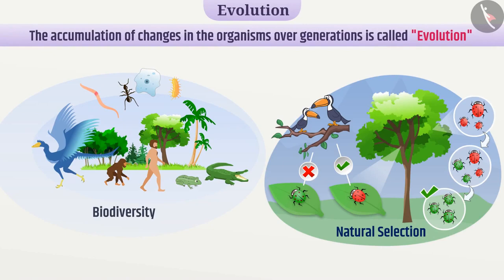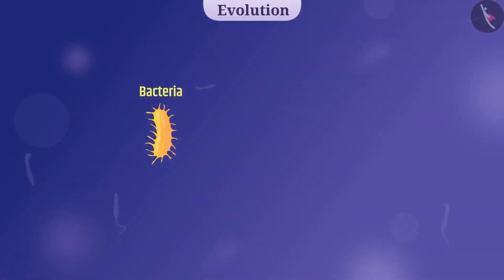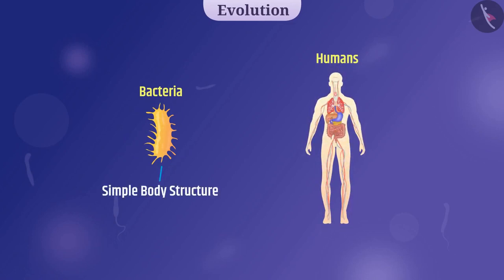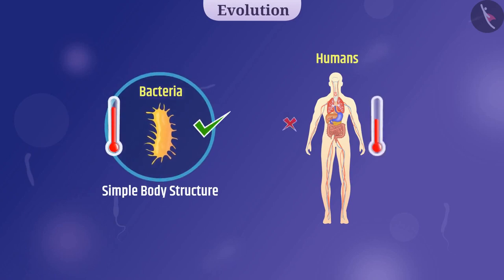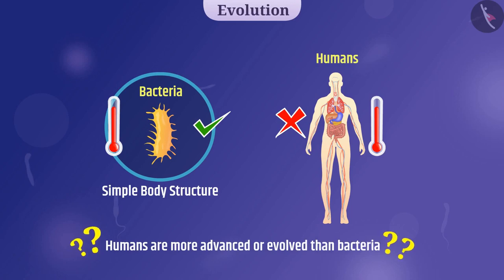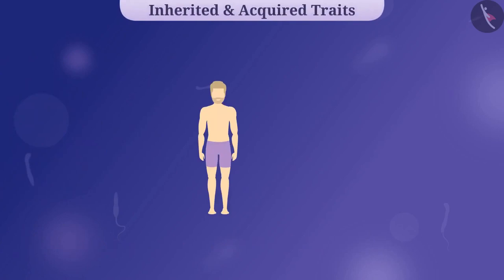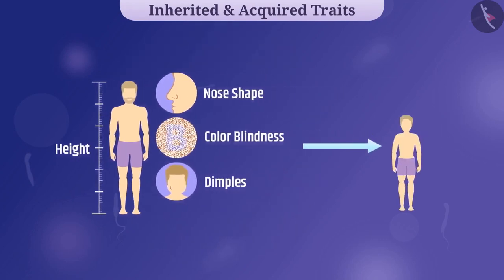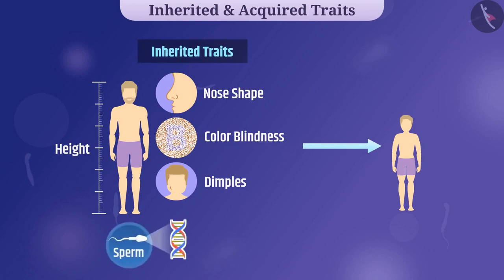Remember, evolution does not mean progress. For example, bacteria are ancient creatures as compared to humans — bacterial body structure is much simpler than human body structure — but bacteria can survive in extreme heat while humans can't. Some characteristics such as height, nose shape, colour blindness, and dimples can be transmitted from one generation to the next. Such characteristics are called inherited traits. Inherited traits are stored in the DNA of gametes and are therefore transmitted from one generation to the next, taking the organisms towards evolution.